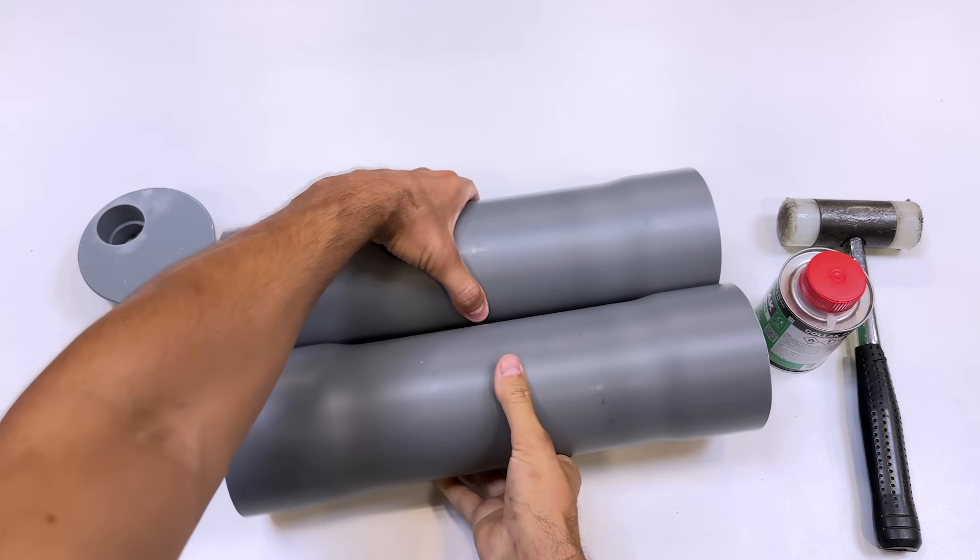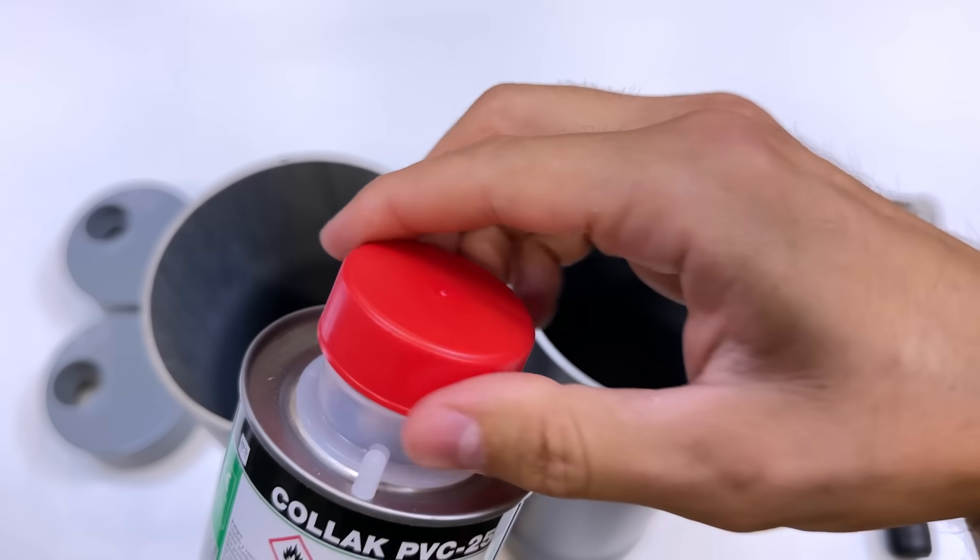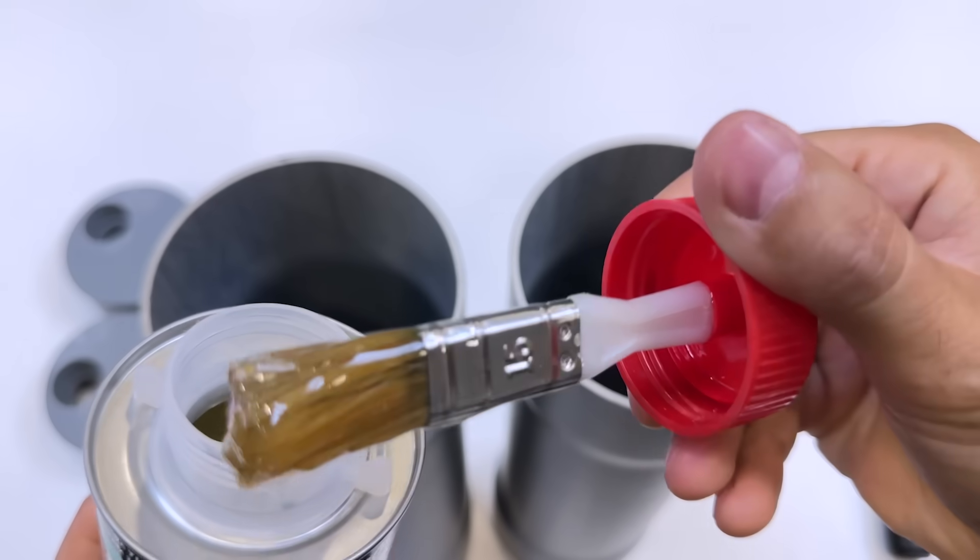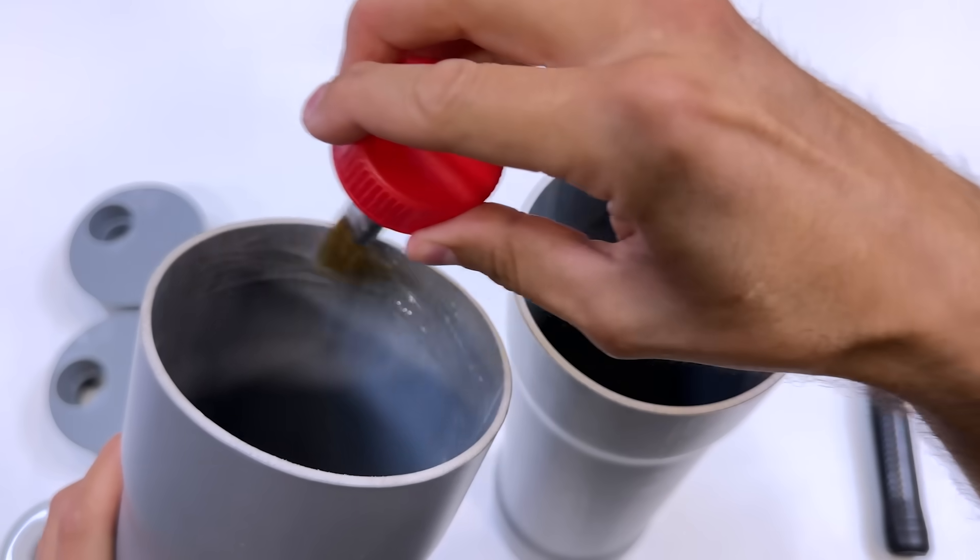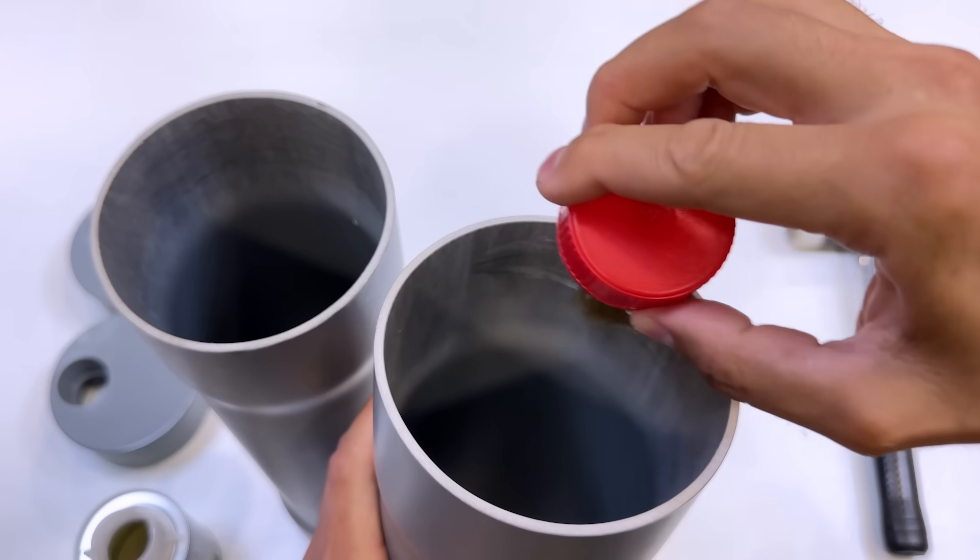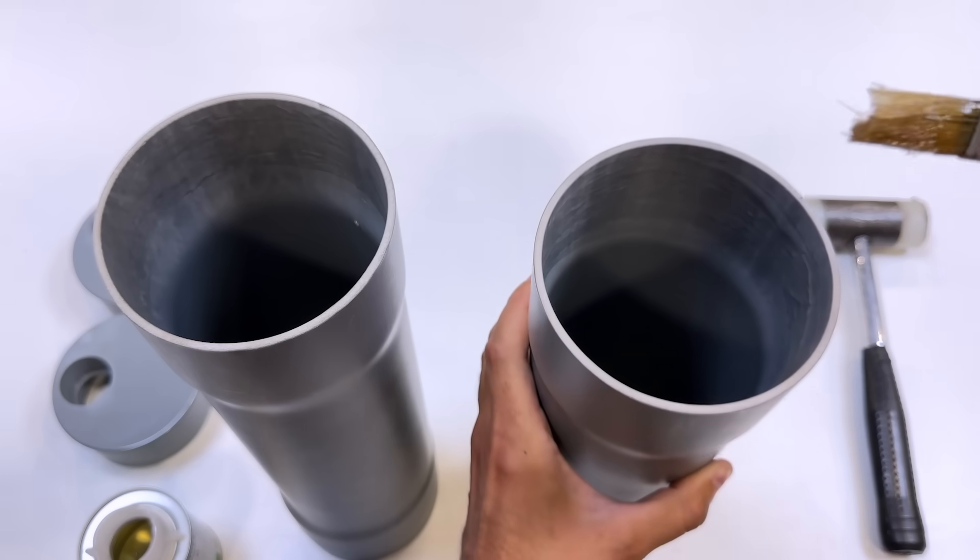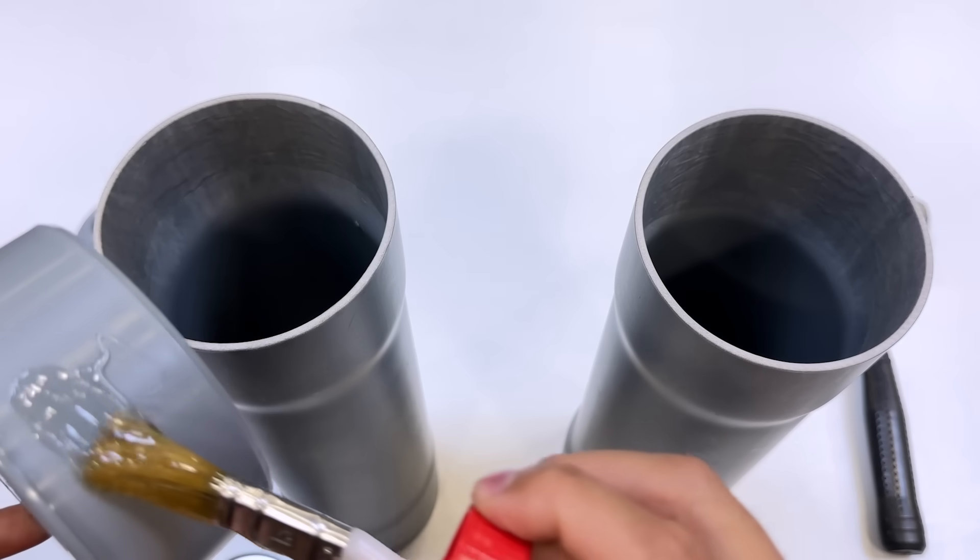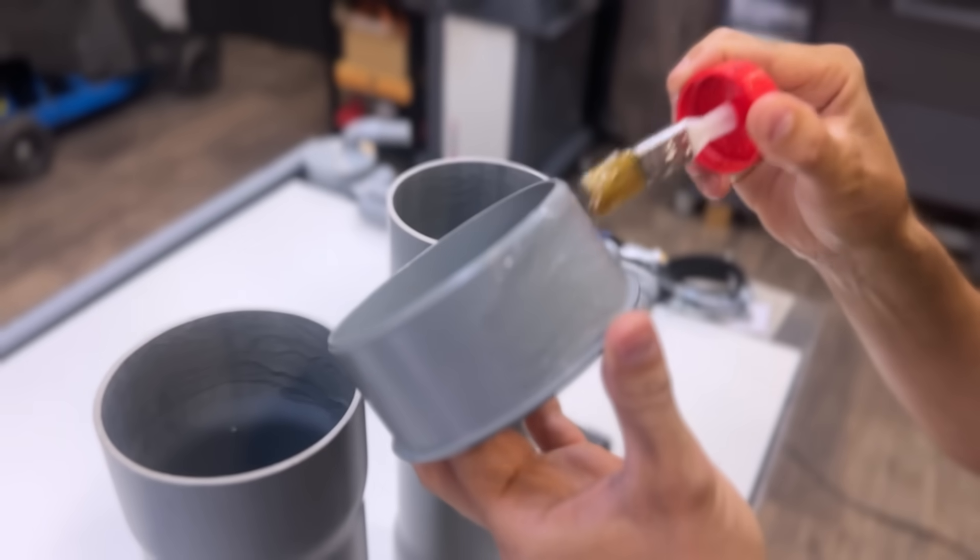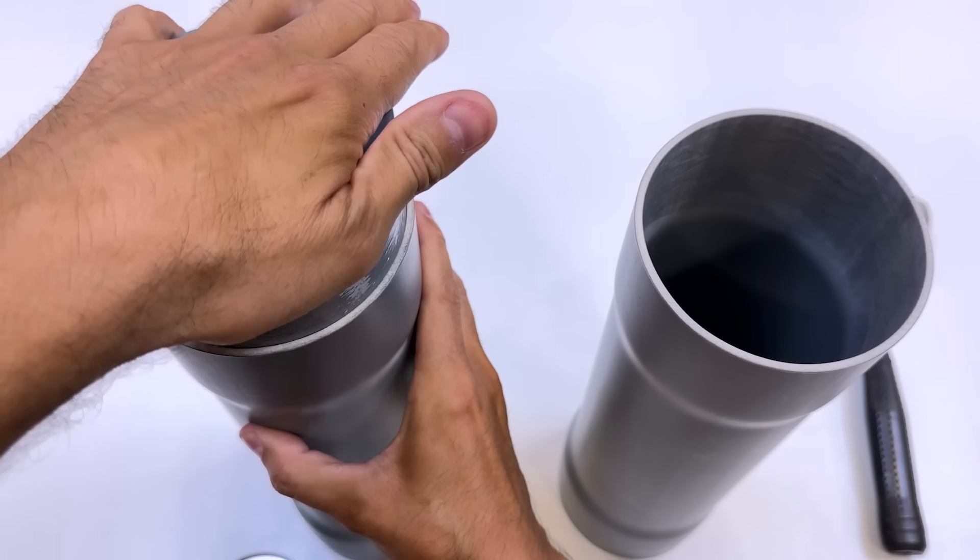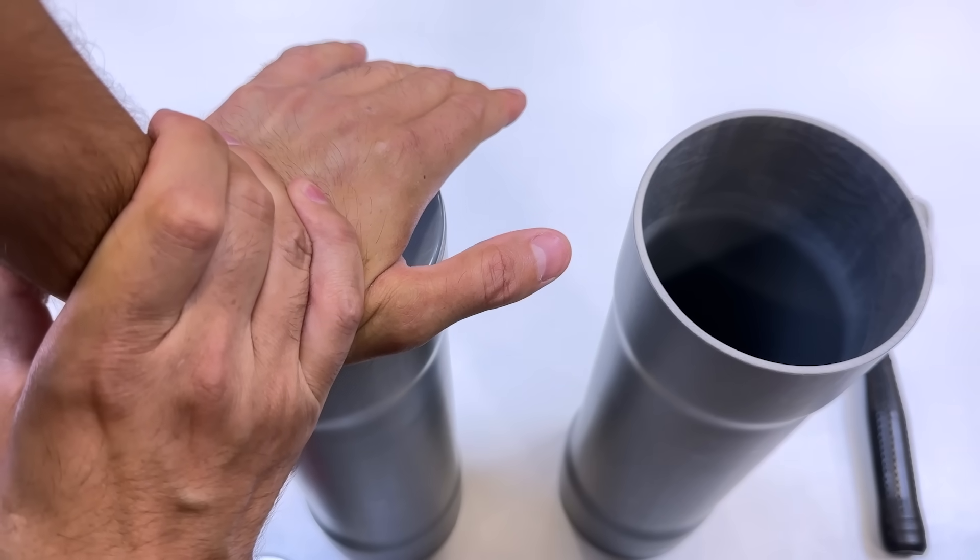Now we'll begin gluing all the elements. To do this, we'll use high-pressure PVC adhesive. In the two large tubes, we'll thoroughly soak the inside with adhesive and also the outside of the caps we're going to put on. And we'll glue them this way, applying some pressure if necessary.